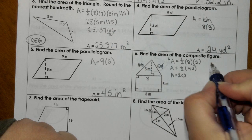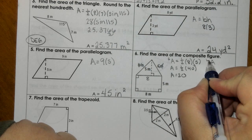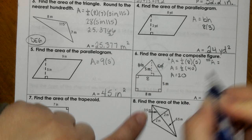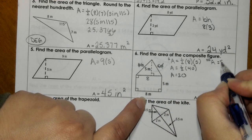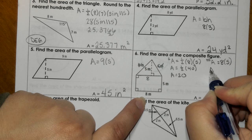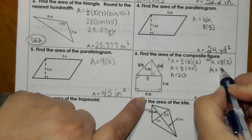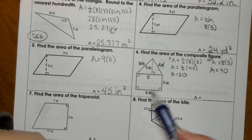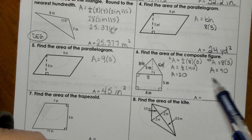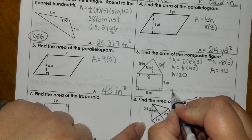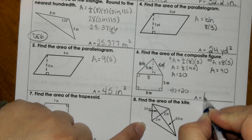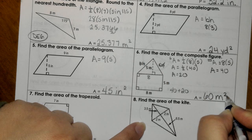The rectangle would be length times width, so 8 times 5, and that gives us 40. So the area of the composite figure would be 40 plus 20, and that would be 60 meters squared.